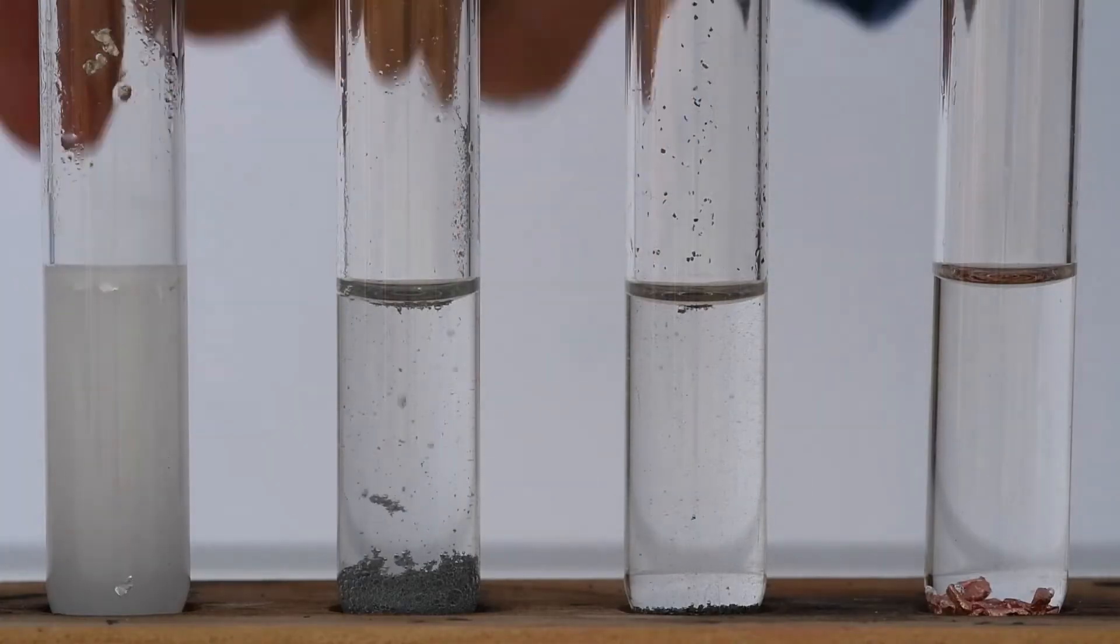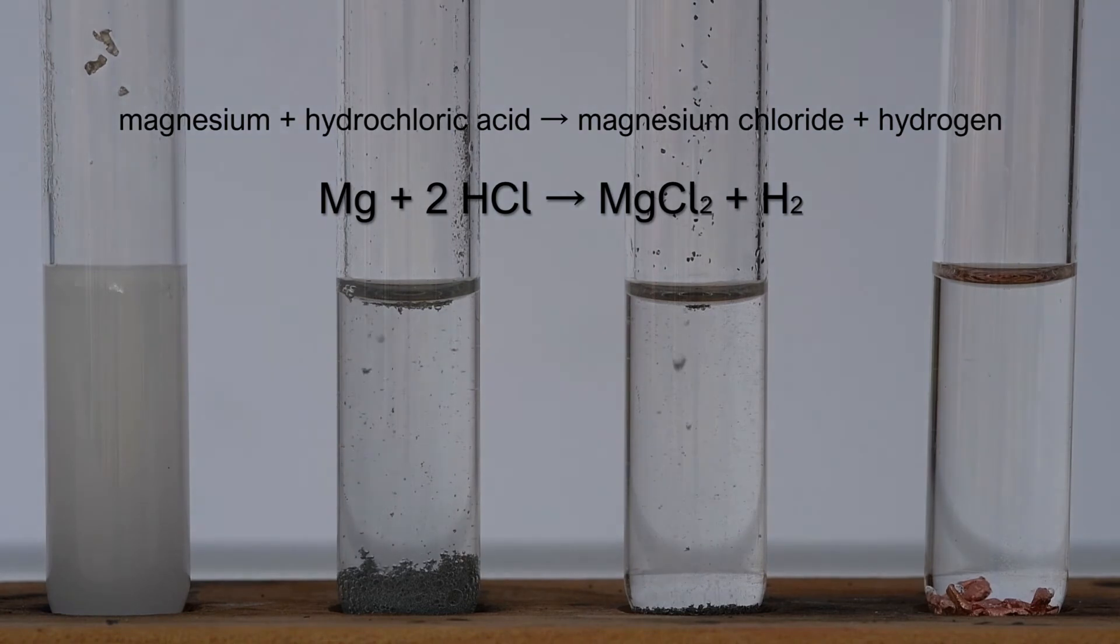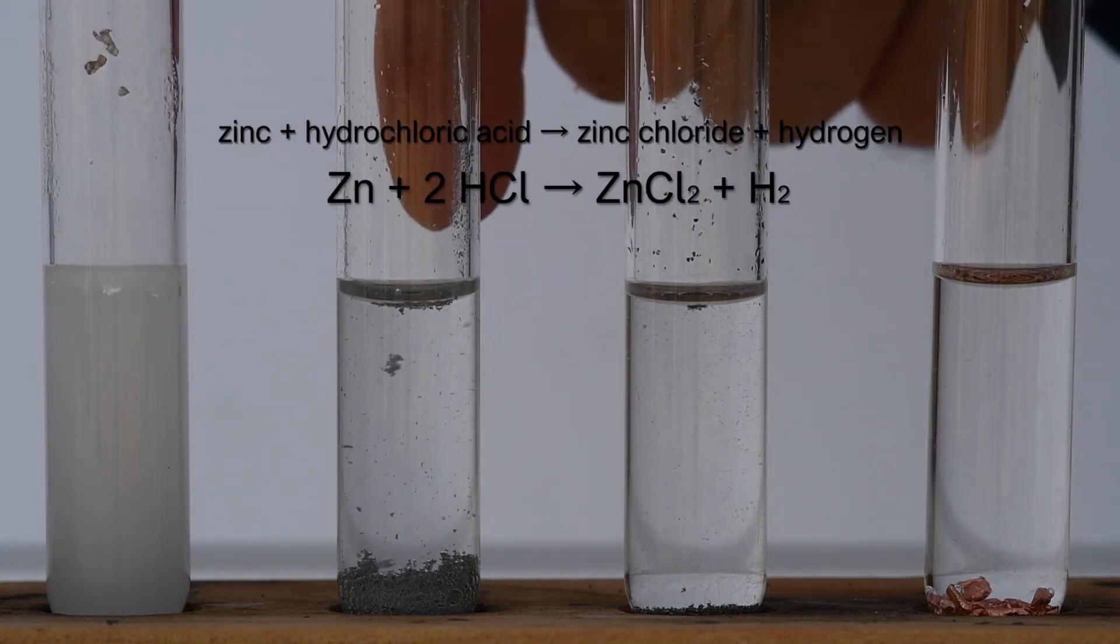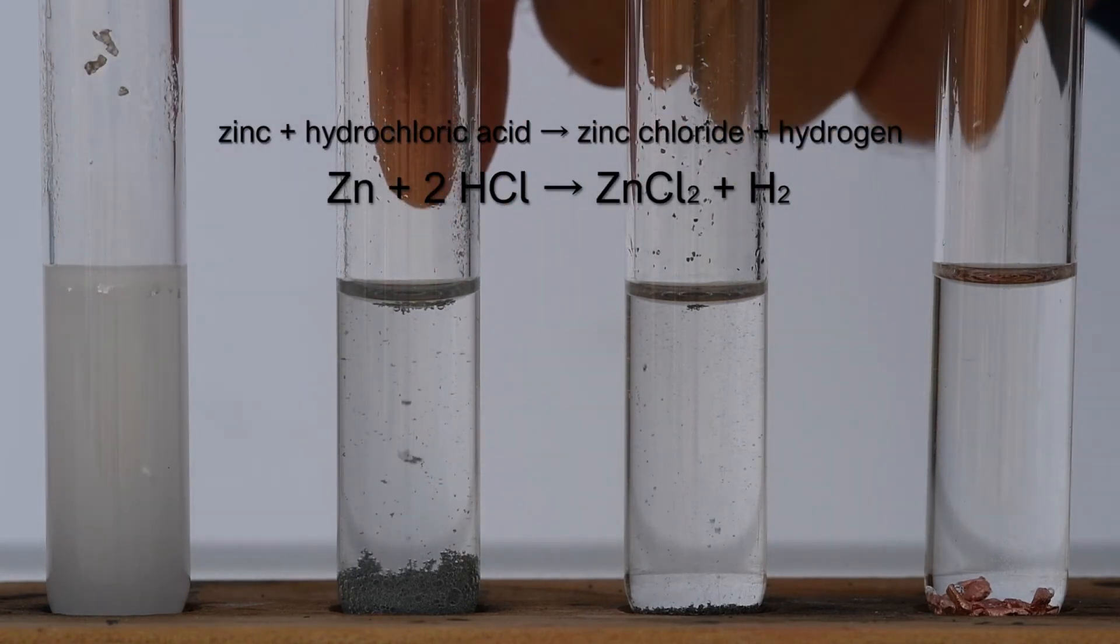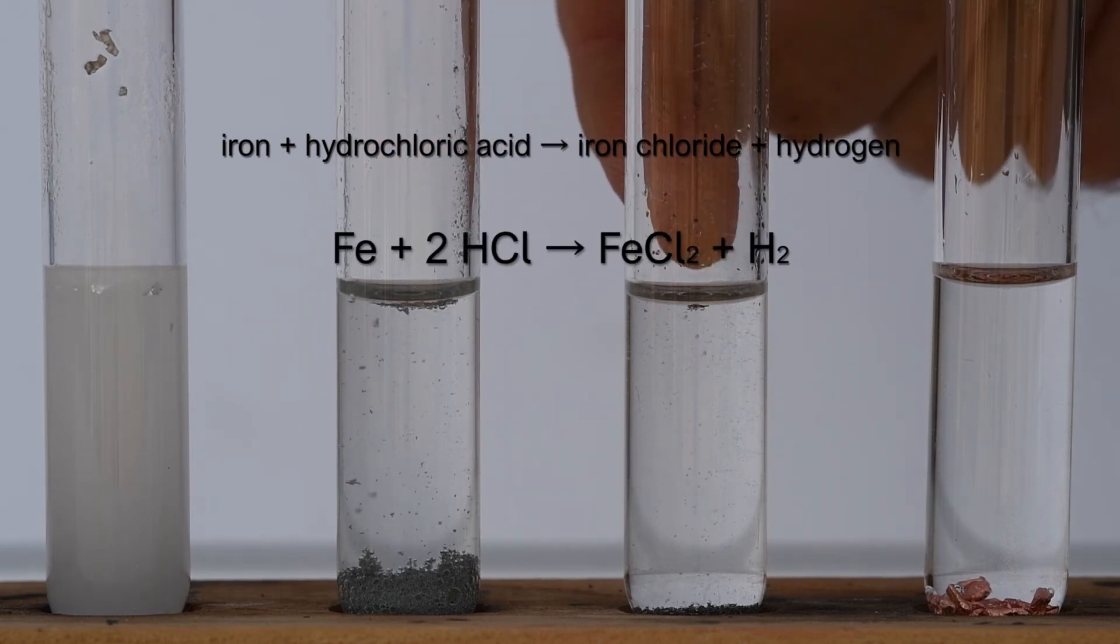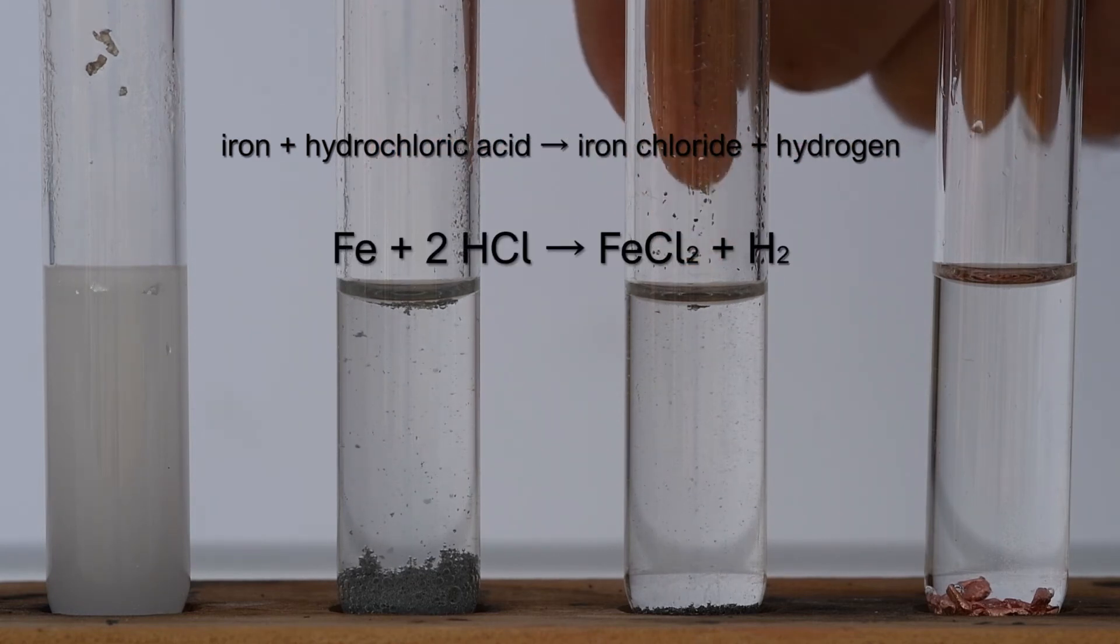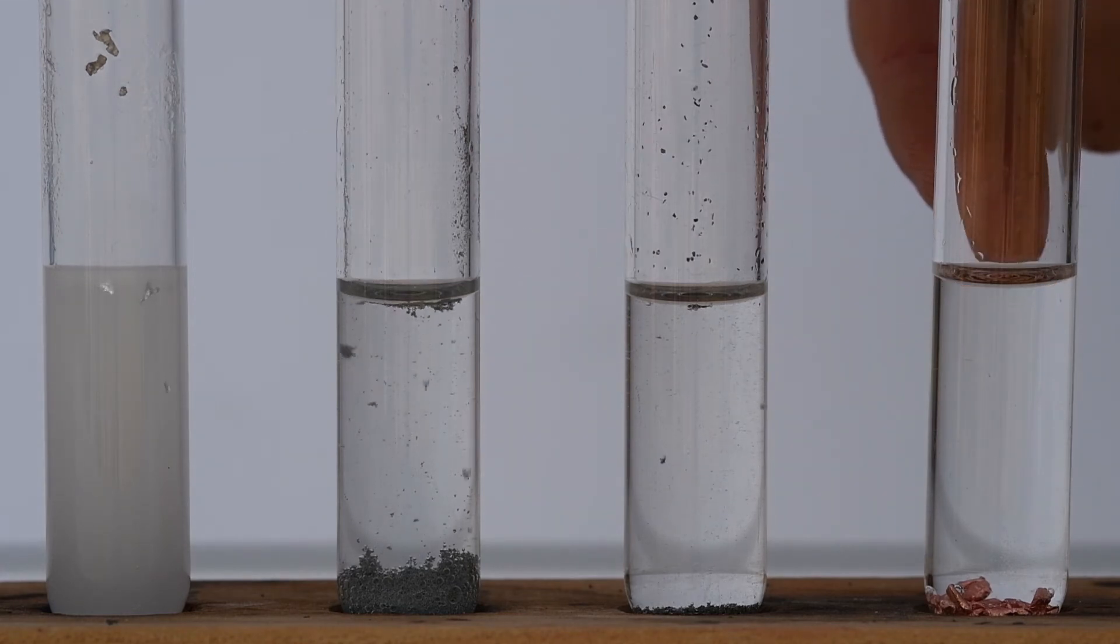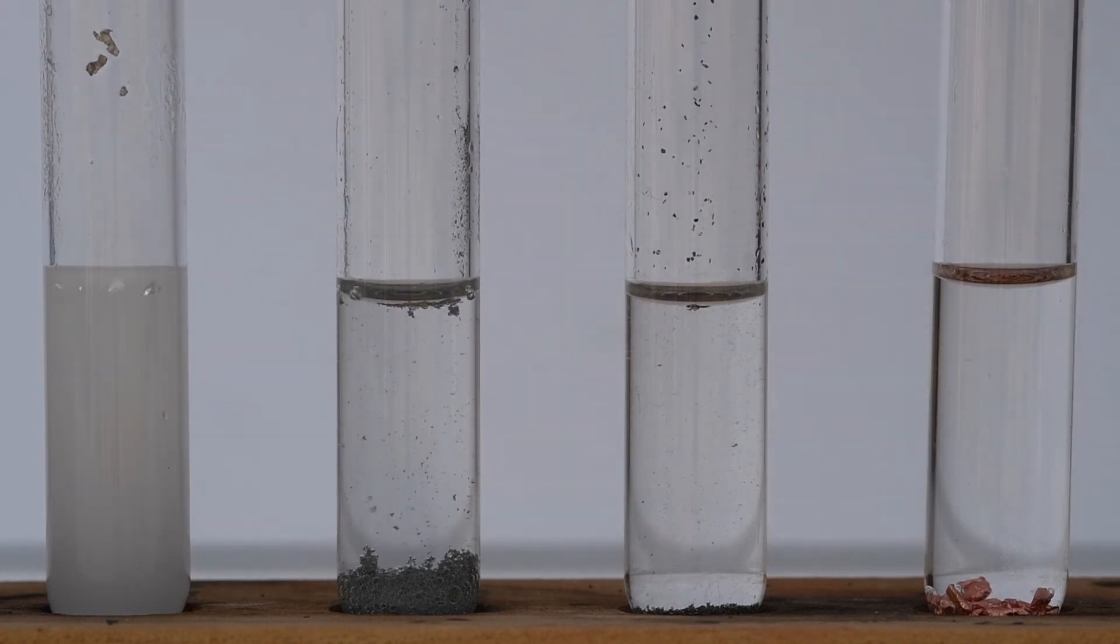So the magnesium will have produced magnesium chloride and hydrogen, zinc is producing zinc chloride and hydrogen, the iron is producing iron chloride and hydrogen, and the copper is not reacting. So copper is less reactive than the acid and therefore there is no chemical reaction there.